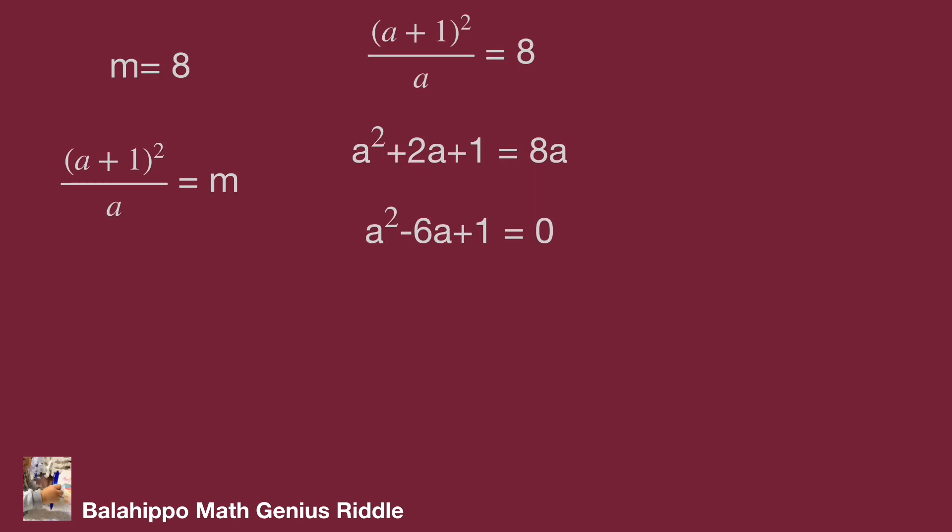Again, utilize the formula. We get the root a equal to (6 ± √(36 - 4)) over 2. Eliminate 2 in the numerator and denominator.